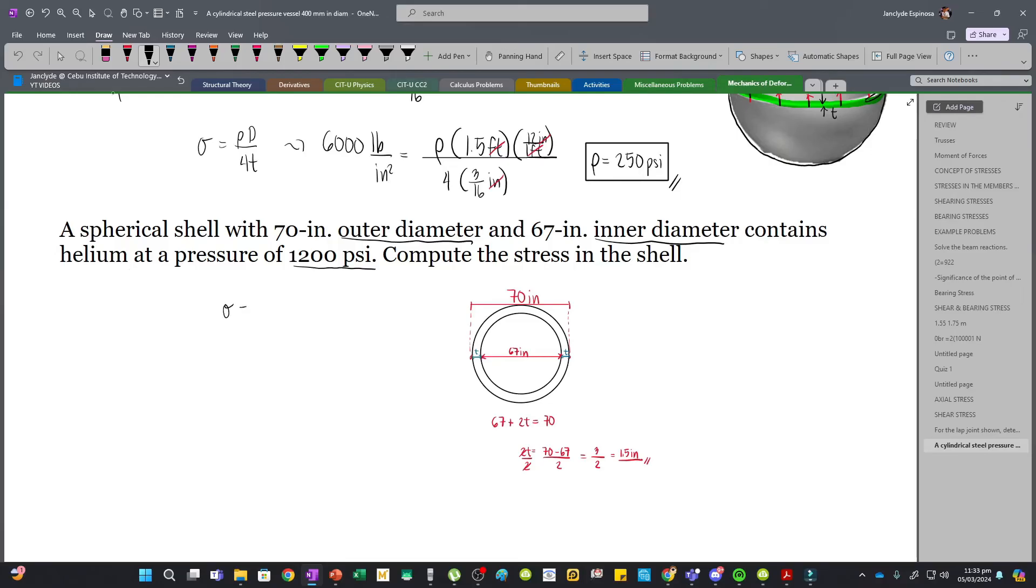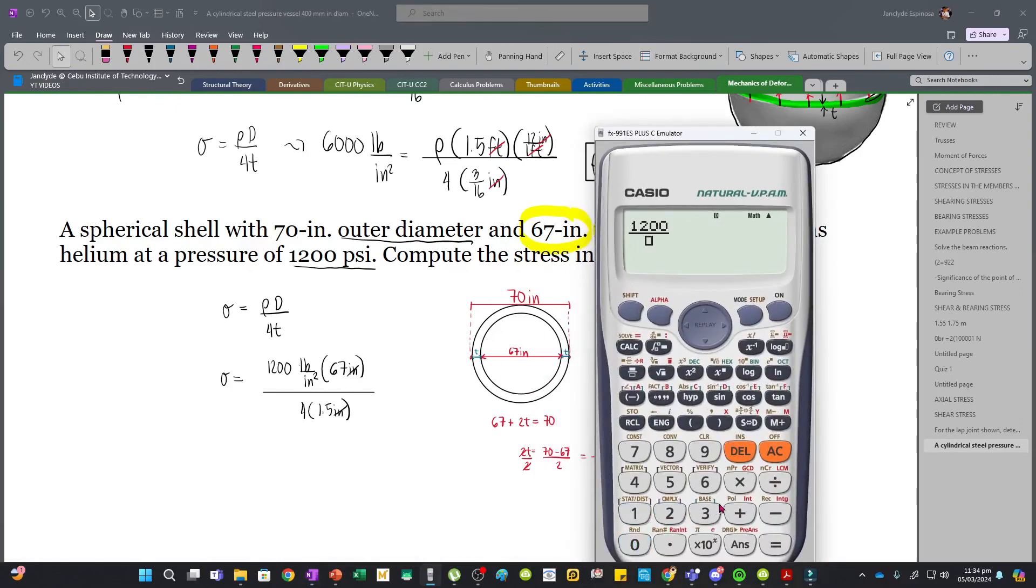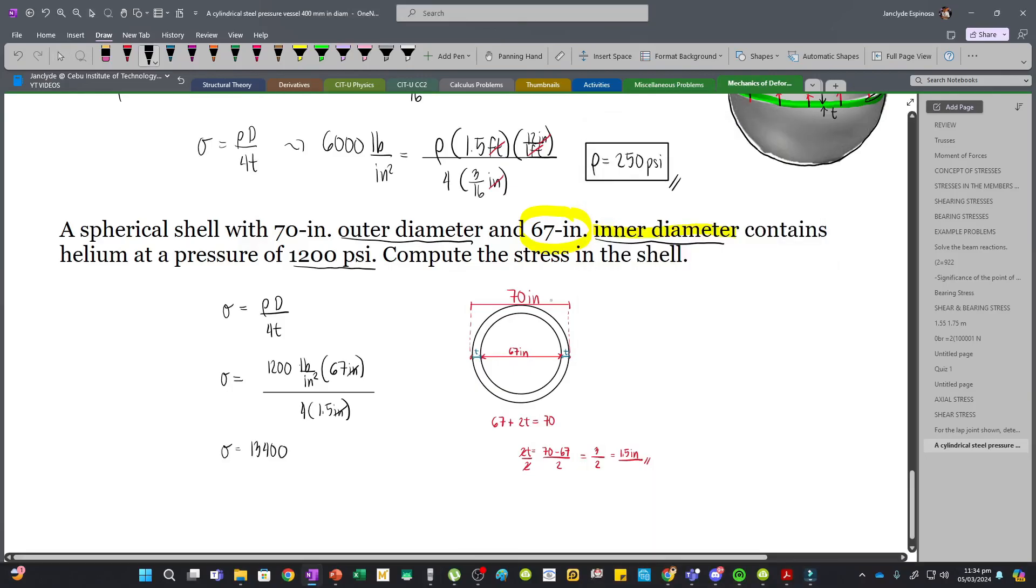We have our internal pressure of 1200 pounds per square inch multiplied by D, which is the inner diameter of 67 inches, divided by 4 times the thickness which is 1.5 inches. Solving the stress, we have 1200 times 67 divided by 4 times 1.5, which gives us 13,400 psi. This is our stress.